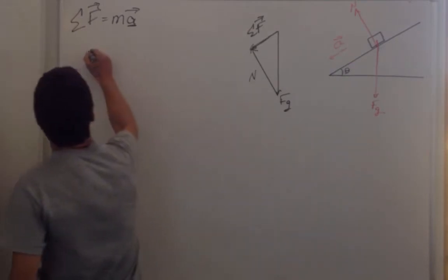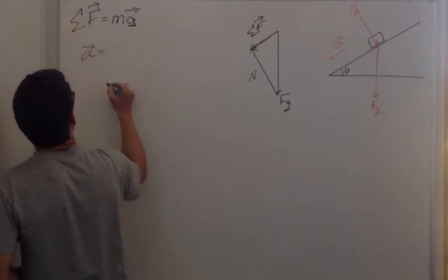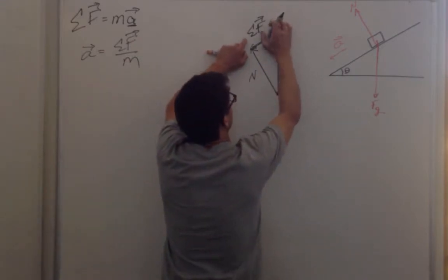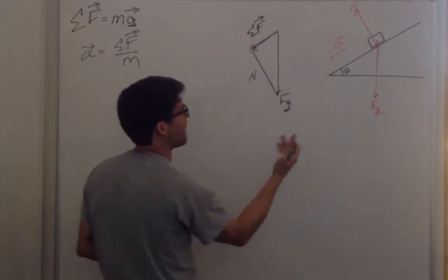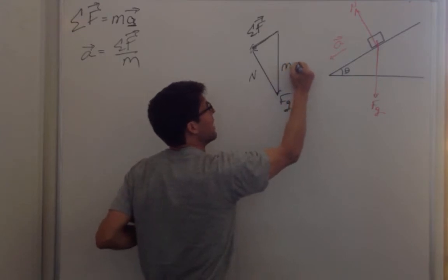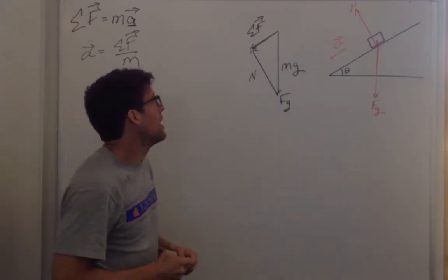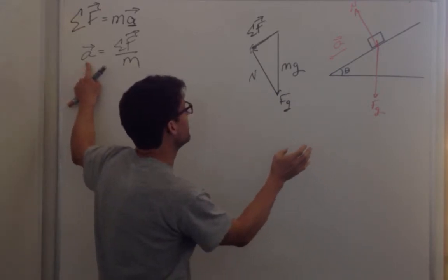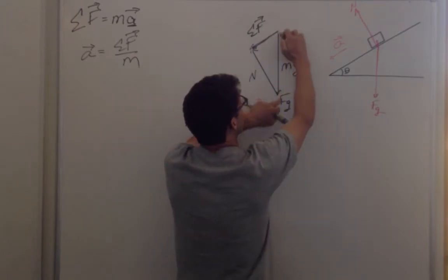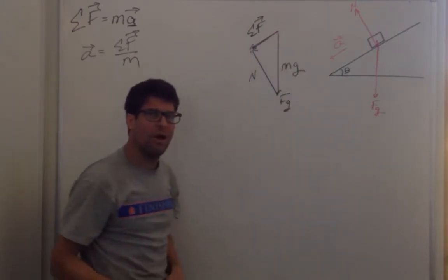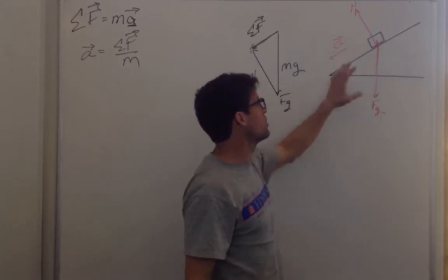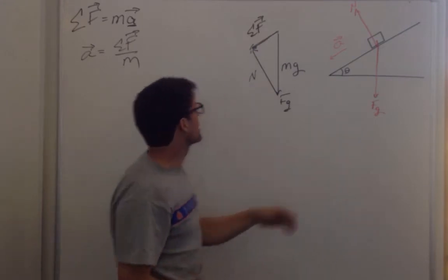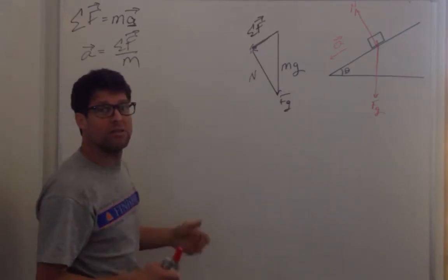The acceleration is equal to the vector sum of the forces divided by the mass. I know the force of gravity is mg, so I can see for sure that the acceleration is going to be less than g because this net force is considerably less than mg. From this drawing, this looks like about half of mg, so it's going to accelerate at about half of gravitational acceleration.